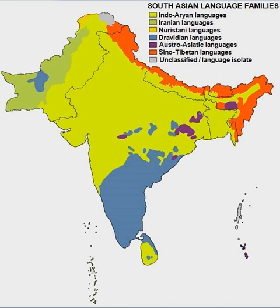Simultaneously, a strong strain of linguistic purism emerged in the early 20th century, culminating in the pure Tamil movement, which called for removal of all Sanskritic and other foreign elements from Tamil. It received some support from Dravidian parties and nationalists who supported Tamil independence. This led to the replacement of a significant number of Sanskrit loanwords by Tamil equivalents, though many others remain.